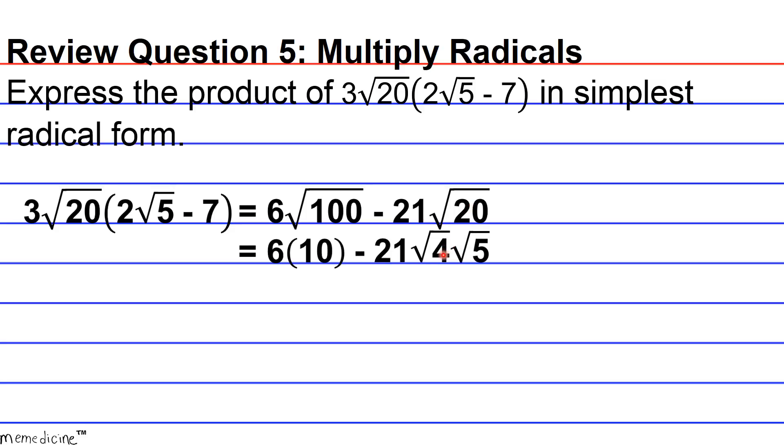When you factor a radicand, you're allowed to assign separate radical symbols to each factor while maintaining multiplication. Since 4 is a perfect square because 2 squared yields 4, √4 simplifies to 2. If you distribute the 2 to the 21, you get 42√5.